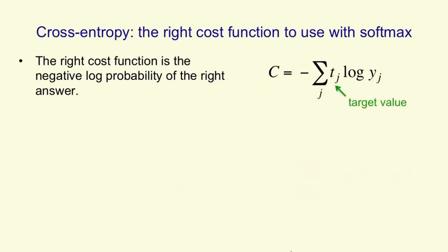Now the question is, if we're using a softmax group for the outputs, what's the right cost function? And the answer, as usual, is that the most appropriate cost function is the negative log probability of the correct answer.